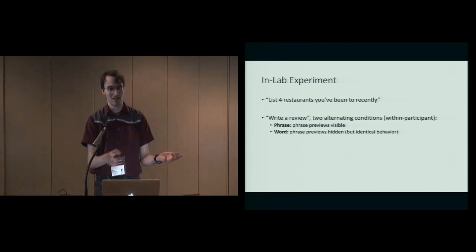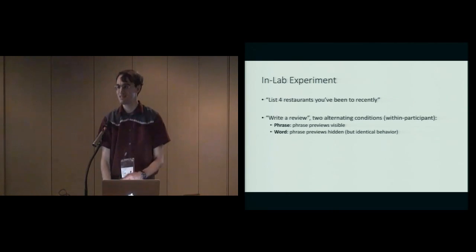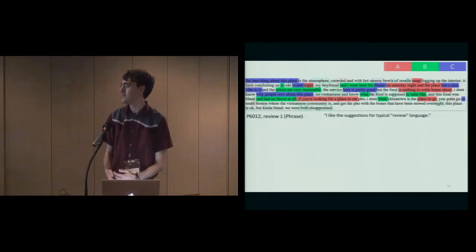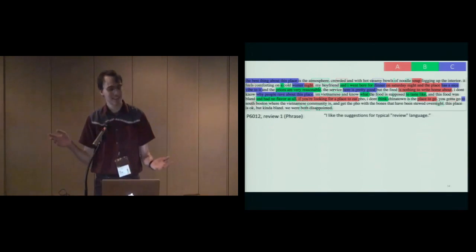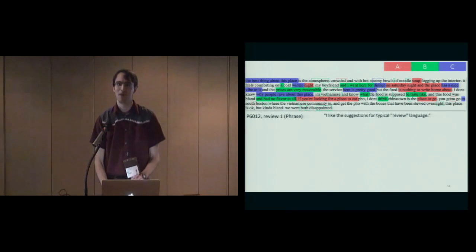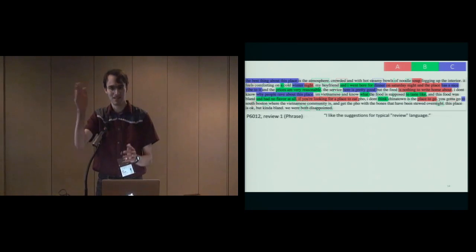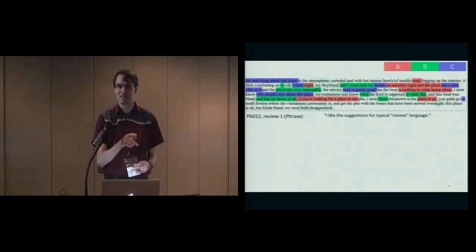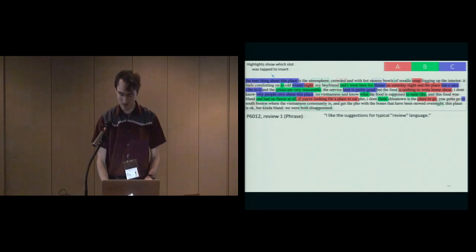In the phrase condition, the phrase previews that you've seen so far are visible. The other condition is exactly the same behavior except we just hid the phrases. Let's look at something that somebody actually wrote in this system. Here is a review that someone wrote in the phrase condition. I know the text is too small for you to read, but what I want to point out is the highlighting. There were three slots that a word could go in—let's call them A, B, and C and give them colors. We highlight each word based on what slot that word came from if it was inserted from a suggestion.